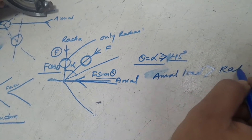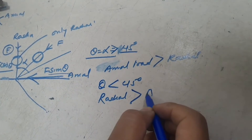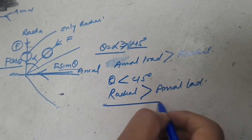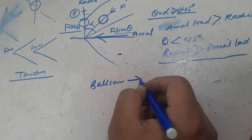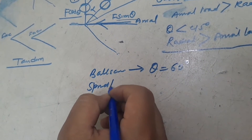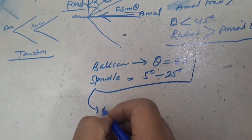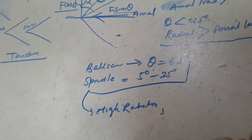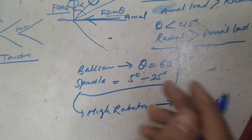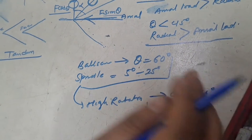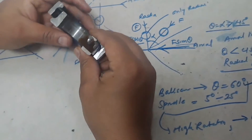Where higher radial load carrying capacity is required, we use a lower contact angle bearing — less than 45 degrees, such as 5, 10, or 15 degrees. Where axial forces are higher compared to radial forces, we use a bearing with a contact angle greater than 45 degrees. In ball screws the contact angle is normally 60 degrees, and in spindle bearings where RPM is high, we use 5 to 25 degrees based on the load. Based on cutting loads and spindle RPM, we decide which spindle bearing contact angle to use.